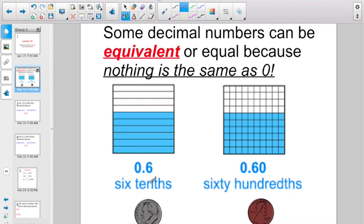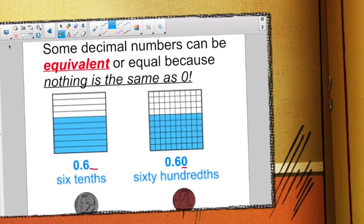Because what we know about tenths is that we said it's the same as a dime, right? So, six dimes is 60 cents. Sixty hundredths, we said a hundredth, is the same as a penny, right? Well, sixty pennies is a hundred cents. Because if you look here in the hundreds place, nothing is the same as zero. So, they're equal or equivalent.